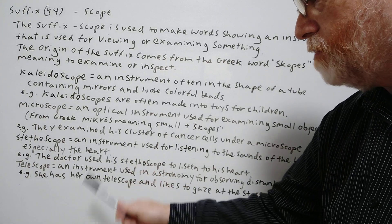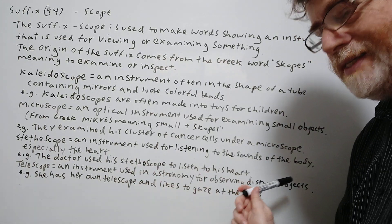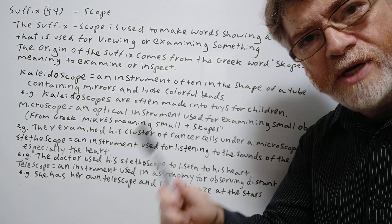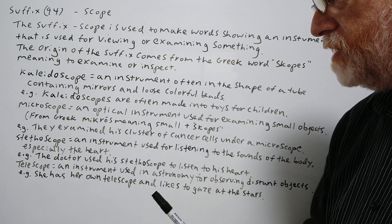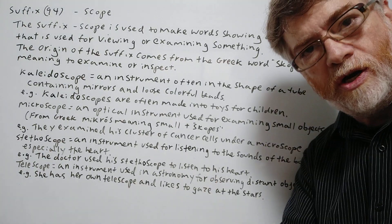And our last one here. A telescope. An instrument used in astronomy for observing distant objects, especially anything in space or celestial objects. She has her own telescope and likes to gaze at the stars.